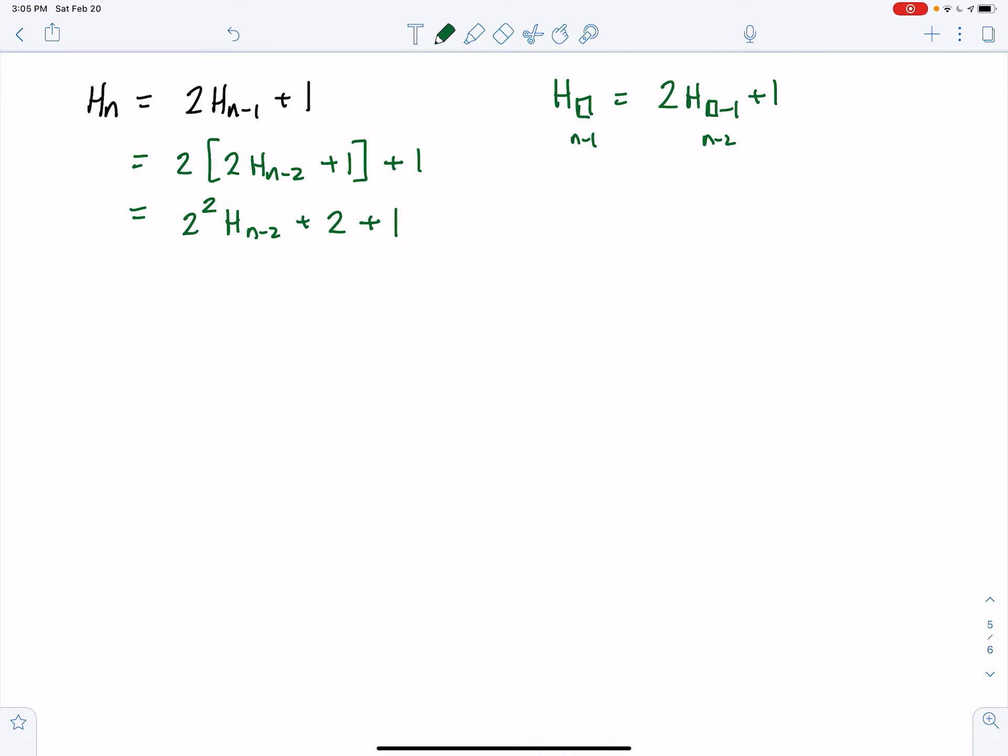Another step or two and we'll be able to see the actual pattern, then we'll move on from there. Now if we substitute h_{n-2}, that's 2² times 2h_{n-3} plus 1.